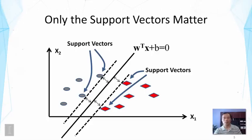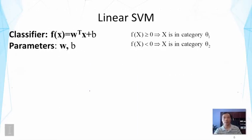The next question is how to actually find the optimal separator — that is, how to find the values of W and B. This is equivalent to solving an optimization problem, since W and B together determine where the separator is. Our classifier says x is in category +1 if the function value is positive, and in the other category otherwise.